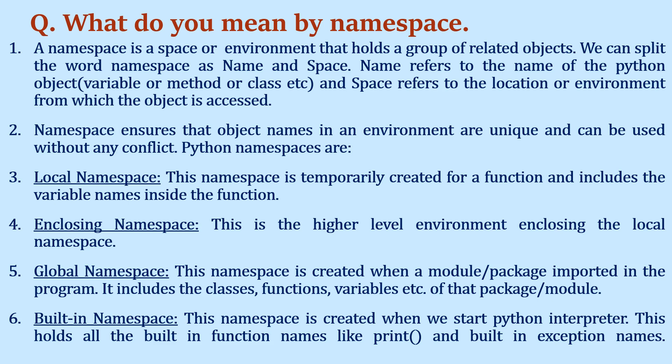The local namespace is created when a function is called, holding variable names created in that local environment. The enclosing namespace is the higher-level environment that encloses the local namespace. The global namespace is created when a module or package is imported, including classes, functions, and variables in that module. The built-in namespace is created when the Python interpreter starts and holds all built-in function names like print() and built-in exception names.